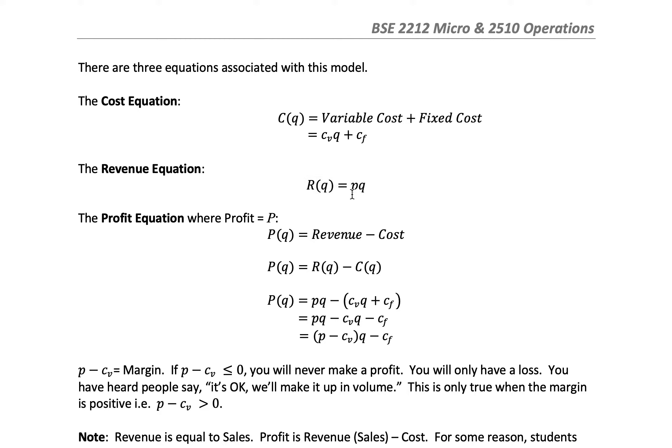Variable cost times quantity plus fixed cost. The revenue is much simpler. It's a linear equation, MX plus B. The slope is C_v, the y-intercept is C_f, and the x-axis is Q. The revenue equation is price times quantity, period. There is no intercept. If you don't sell anything, you don't make any sales. If you sell one, you get P. If you sell two, you get 2P.